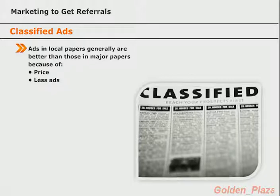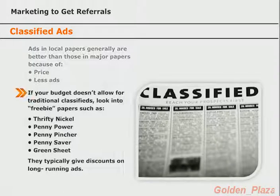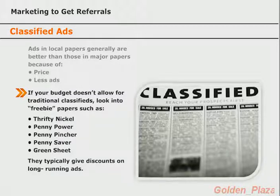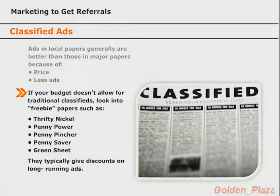Take a good look at your budget and see if you have the funds available to work with classified ads, either in the local papers or major ones. If you don't have the funds available for paid classifieds right now, feel free to start with freebie newspapers. With freebie papers, the paper is free but not the advertising space — they will still charge for you to place ads, but will almost always give discounts for ongoing ads or ads that appear in multiple sections. Examples include Thrifty Nickel, Penny Power, Penny Pinscher, Penny Saver, and Green Sheet. Most of these newspapers are also available online, so consider taking advantage of that additional exposure.